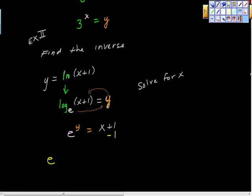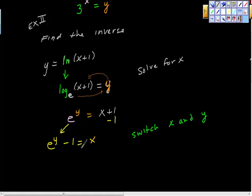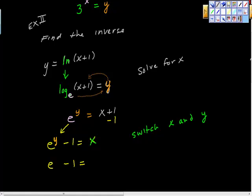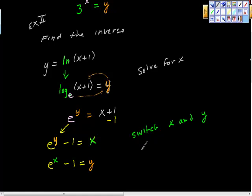I'm going to subtract that from each side. We're going to have e to the power of y minus 1 is equal to x. And now what's the last step? Switch x and y. If we switch x and y, we'll get: e to the x minus 1 equals y. And now we have that as an inverse function.